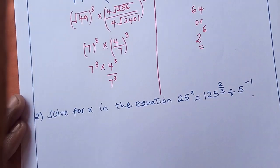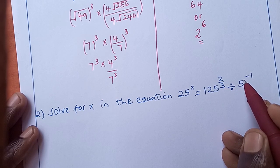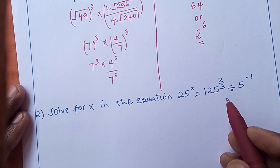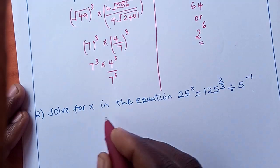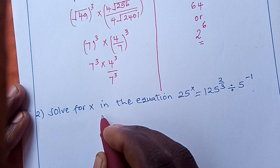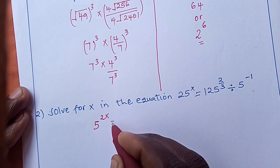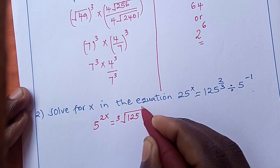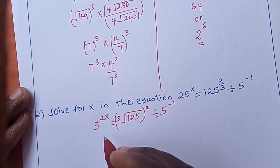The second question: 25 raised to x equals 125 raised to 2 thirds, divided by 5 raised to negative 1. We follow the same procedure, making the bases alike. We use 5 as our common base on both sides. 25 is 5 squared, so the left side becomes 5 squared raised to x, which is 5 to the power 2x. On the right, we find the cube root of 125 and square the result, then divide by 5 to the negative 1.